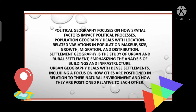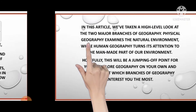In political geography we study what political events are happening and in what manner, how constituencies are divided, what the election scenario is, what kind of development framework exists, what the population's behavior is — all these things are studied under political geography. After human geography, the last topic we study is biogeography.